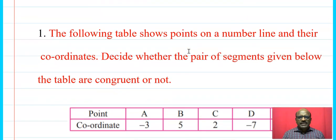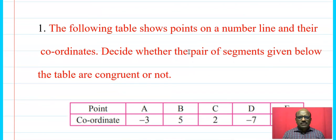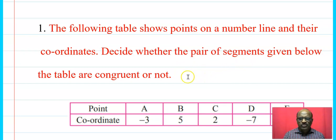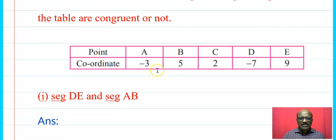Now we will start practice set 1.2. The following table shows the points on a number line and their coordinates. Decide whether the pairs of segments given below are congruent or not.